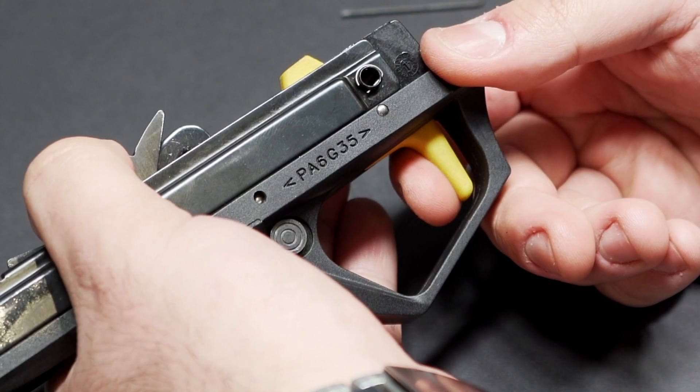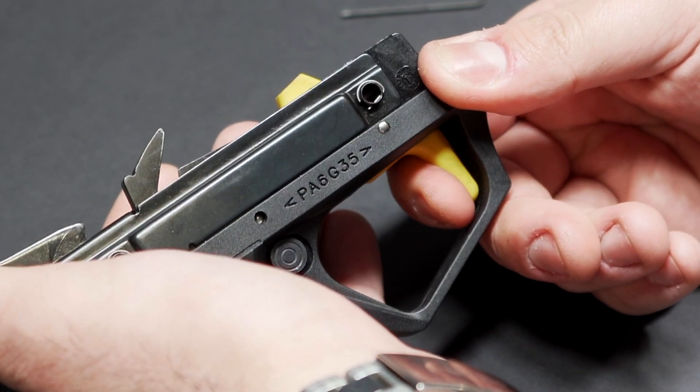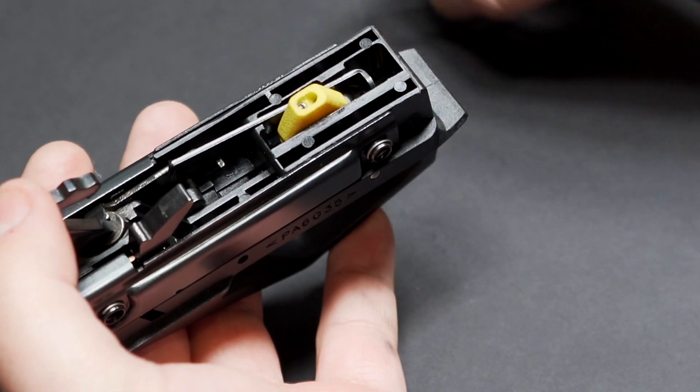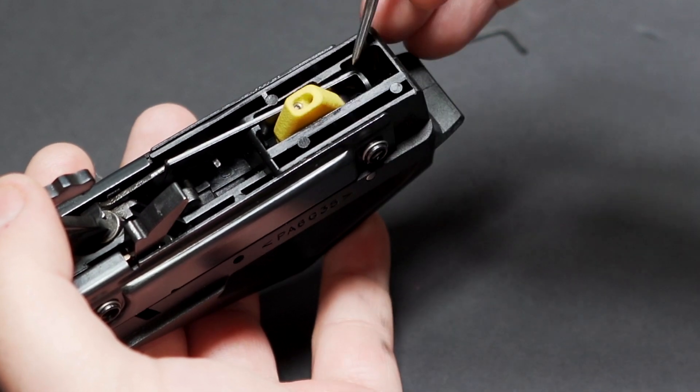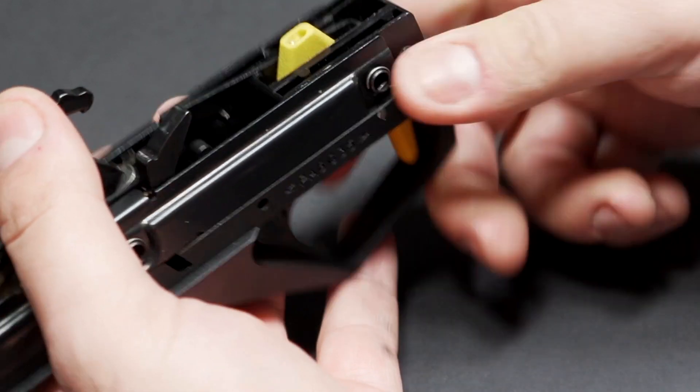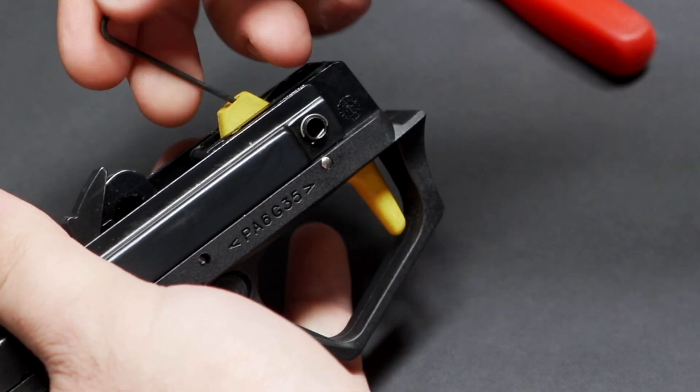As you can see, that is a single stage trigger there with a little bit of take up before you hit the brake. Now the Supernova is technically a two stage trigger because you have the resistance from the spring on the transfer bar, which is your first stage, and the resistance from the spring in the disconnector, which is your second stage.